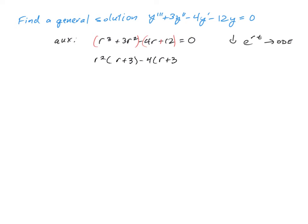Then we can factor out the common r + 3 leaves you with an r² - 4. That's going to factor with the difference of squares, so our values of r are going to be -3, -2, and positive 2.